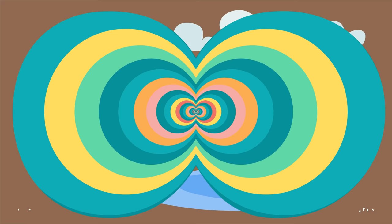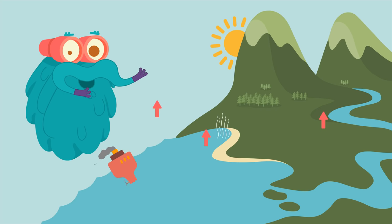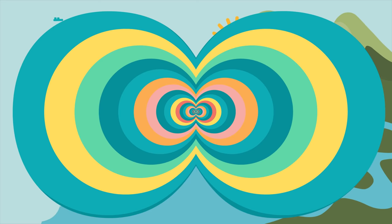Zoom in! When the sun heats up the rivers and oceans, water becomes water vapor and it rises up in the air. This process is called evaporation. It is the first step of the water cycle.